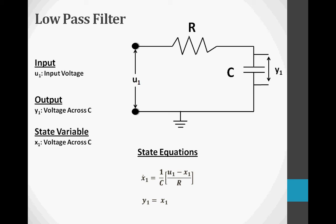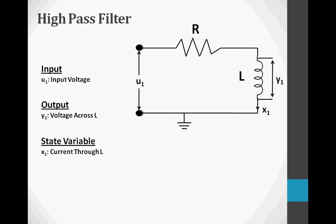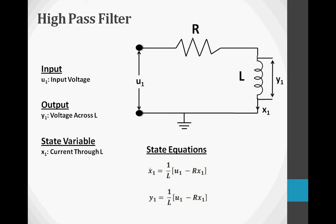In this circuit, there is a resistor and an inductor in series. The input to this system is the voltage, U1. The output is the voltage across the inductor, Y1. The inductor has the ability to store kinetic energy, while the resistor is unable to store any energy. This leaves the inductor as the only energy storage device. The state variable for the system is current through the inductor, X1. To find X2 dot, we subtract the voltage across the resistor from the input voltage, all multiplied by 1 over L. The output is the same as the X1 dot equation.